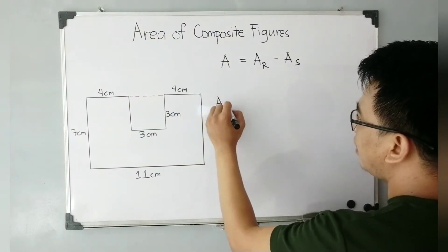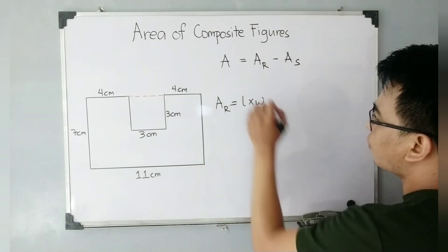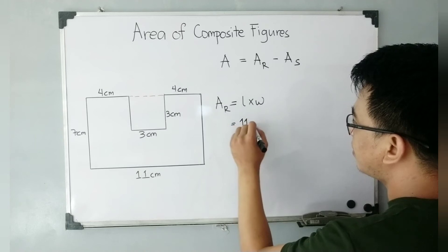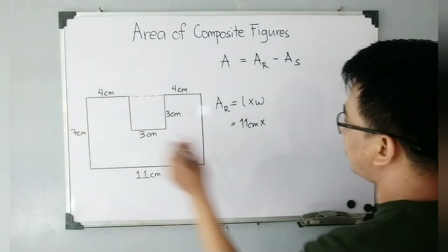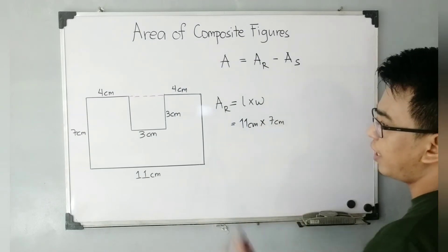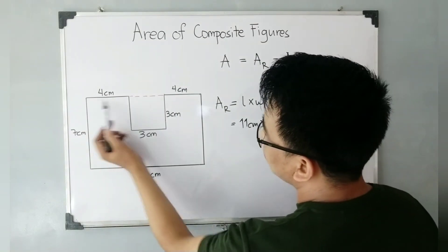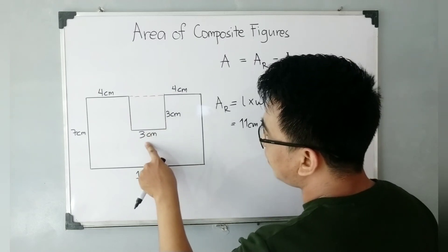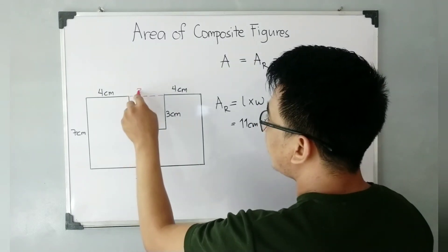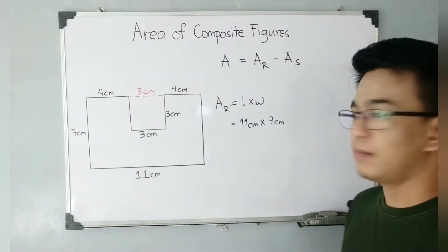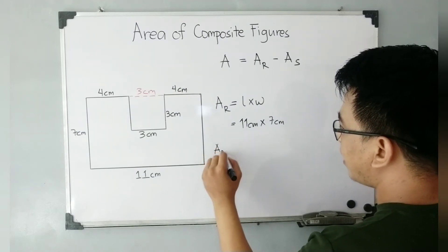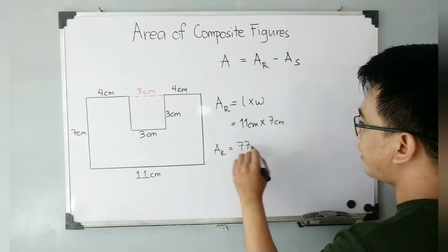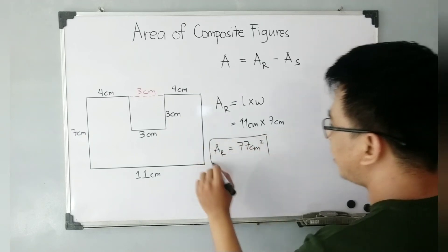For the area of the rectangle, the formula is length times width. The length here is 11 centimeters and the width is seven centimeters. As you can see, if this side is 11, that's also 11 — we have four centimeters plus four centimeters, and this three-centimeter side equals the other three-centimeter side. So the area of the rectangle is 11 times 7 centimeters, which gives us 77 centimeters squared.